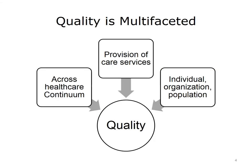Both definitions cover the overarching spectrum of quality in health care, providing optimal care to all patients that achieves the expected outcomes. These definitions encompass quality as a multi-faceted outcome that occurs across the health care continuum, and where provision of care services is key. Quality can be measured at the individual, organization, and population level.